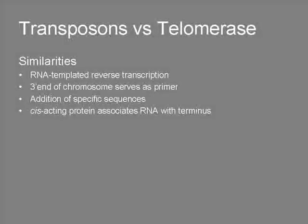Despite all the different mechanisms explained here, there are actually similarities for elongation by telomerase and by transposable elements. For both, RNA is the template for reverse transcription. For both, the 3' end of the chromosome terminus serves as a primer.